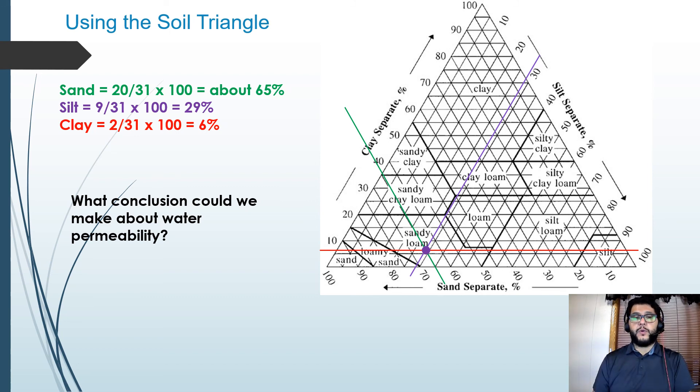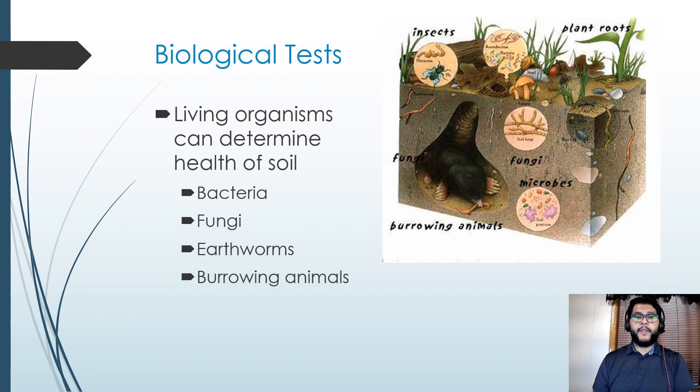You can look at biological tests—that's not really so much a test as determining what's there, so you do a survey of it. You can see if there's bacteria or fungi, earthworms, or burrowing animals like moles or things like that. If there's more of it then that tends to be that your soil is more aerated. Your soil tends to be healthier. Certain bacteria and fungi can help plants denitrify air so that it can be usable and not need so much fertilizer and things like that.